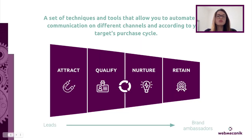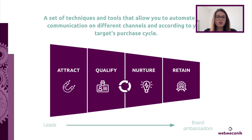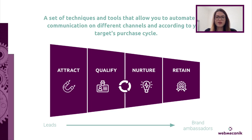Marketing automation is also four phases for one strategy: winning and keeping your customers. For each step of the conversion funnel, we implement marketing actions that will convert your prospects into committed customers — potentially brand ambassadors — by delivering the right message to the right person at the right time and using the right channel. That's what marketing automation is about.